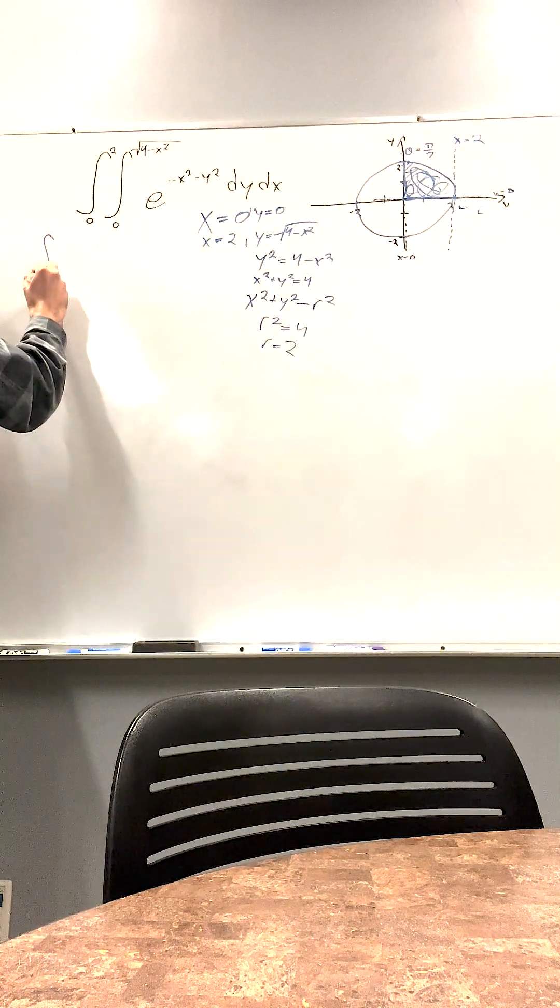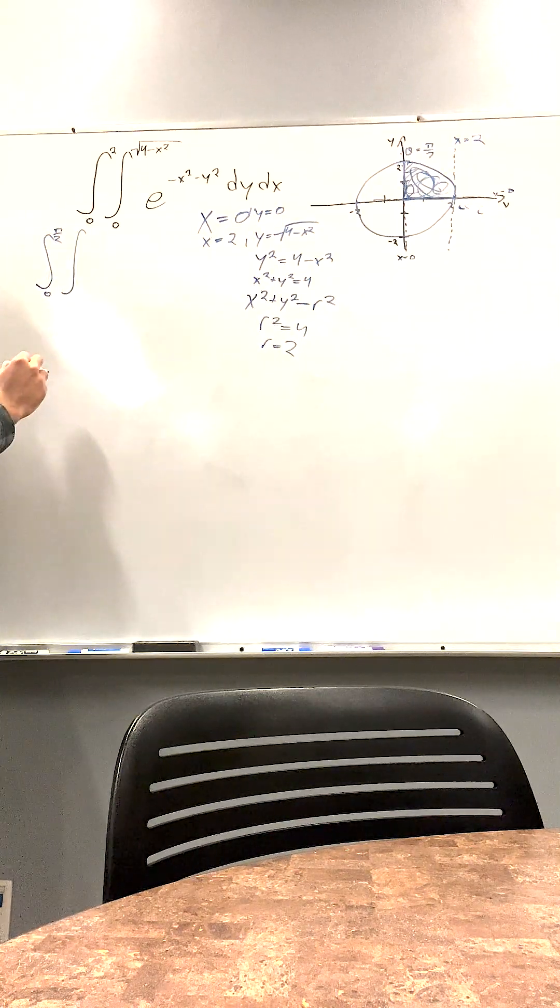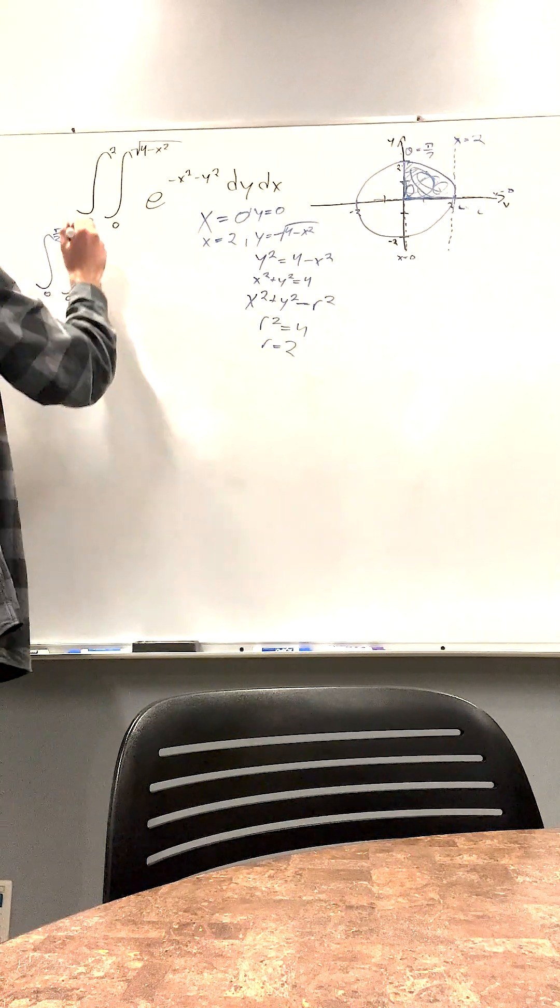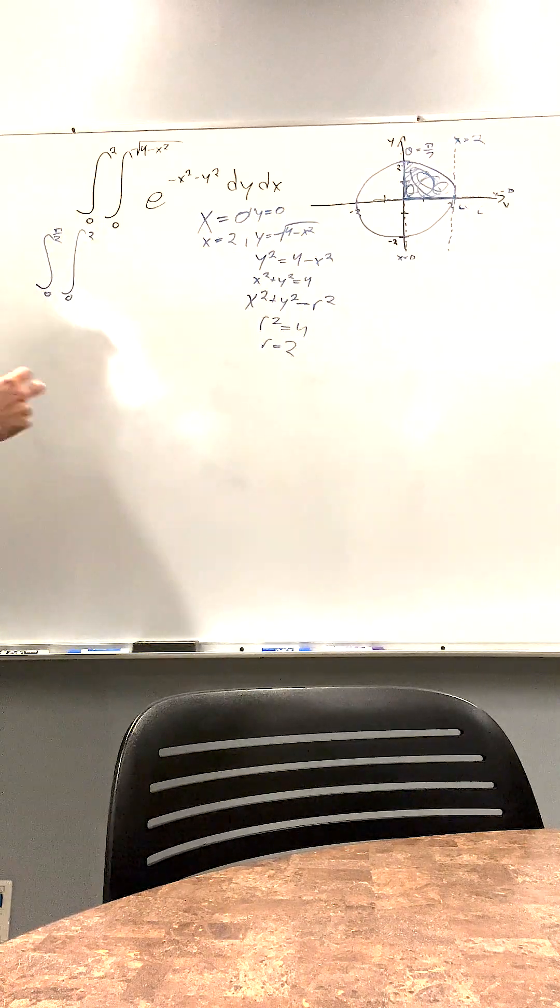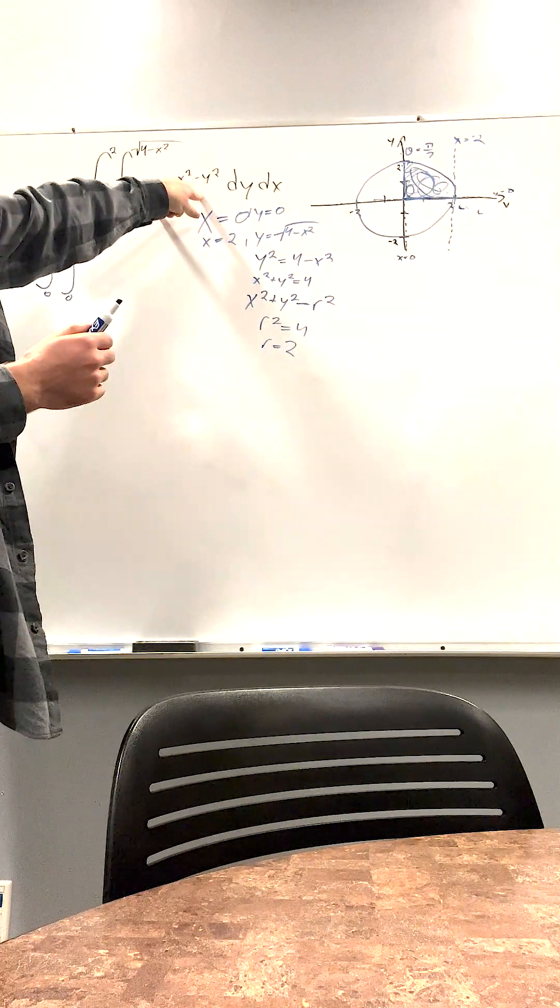Let's write our bounds. So this is theta. Theta goes from 0 to pi over 2. And radius goes from 0 to 2. But if we plug this in, we're going to have x and y.